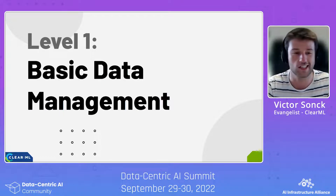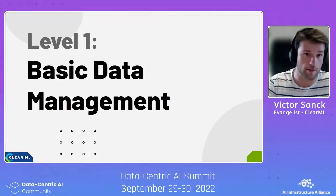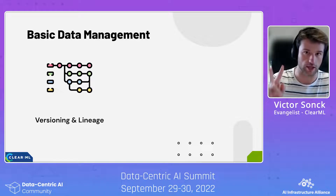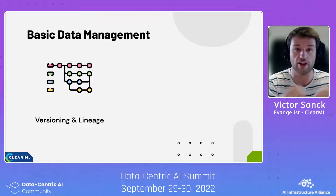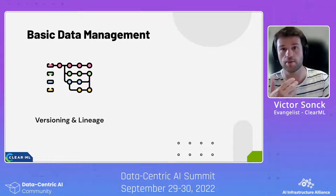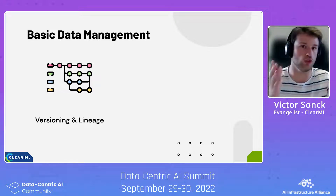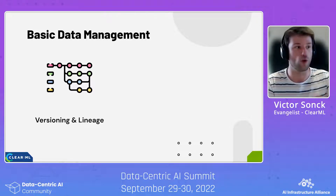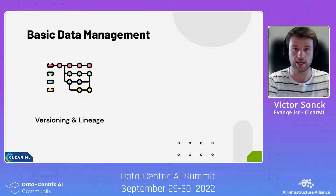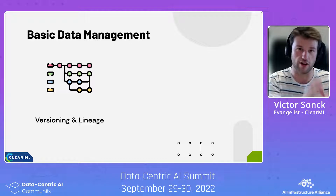We'll go through three levels in this talk, and level one is just basic data management. Basic data management should really do only two things: versioning and lineage, which means you have a history of all the changes made over time on a specific dataset. It's a bit like Git — the feeling is the same. The idea is that you can always go back, always have visibility into what data was added, and it makes it easier for someone new to the project.